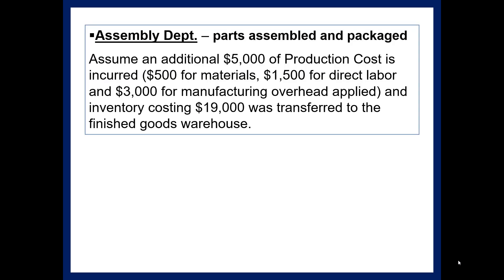More costs will be incurred in the assembly department, where parts are assembled and packaged. Assume an additional $5,000 of production cost is incurred: $500 for materials, $1,500 for direct labor, and $3,000 for manufacturing overhead applied. Inventory costing $19,000 was transferred to the finished goods warehouse.